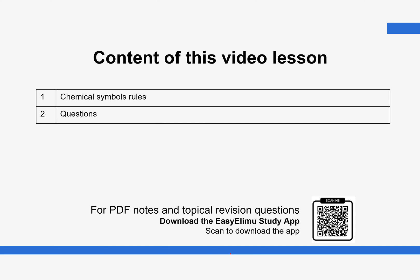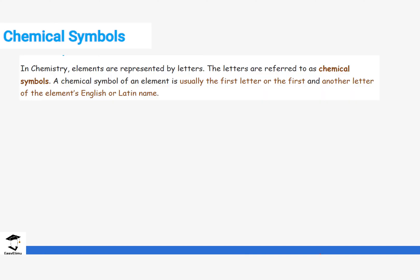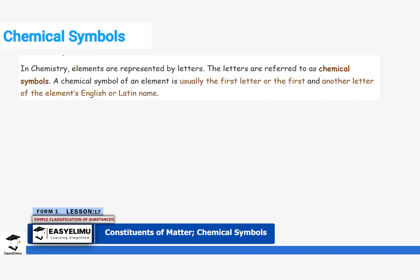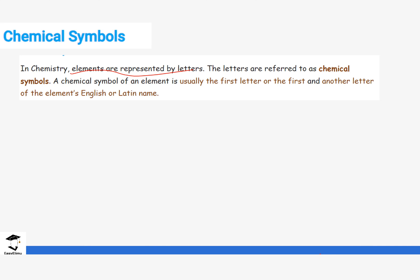So first we will start with what chemical symbols are and where they come from. Chemical symbols are letters that help to represent elements. Instead of writing the full chemical name every time, we use a letter representation. These letters can either be derived from the English word of the element or from the Latin name of the element.